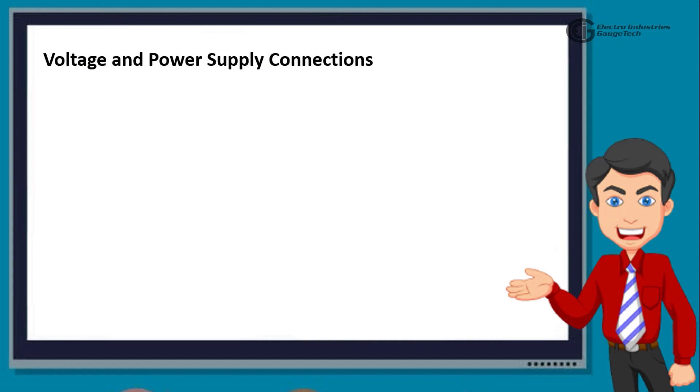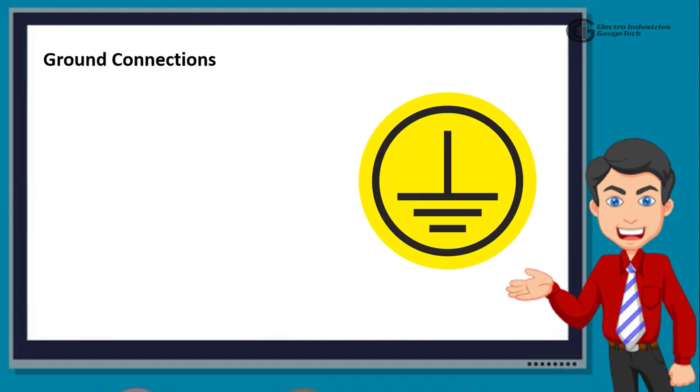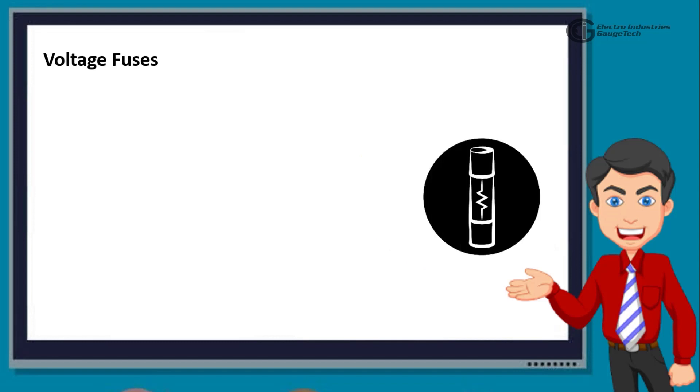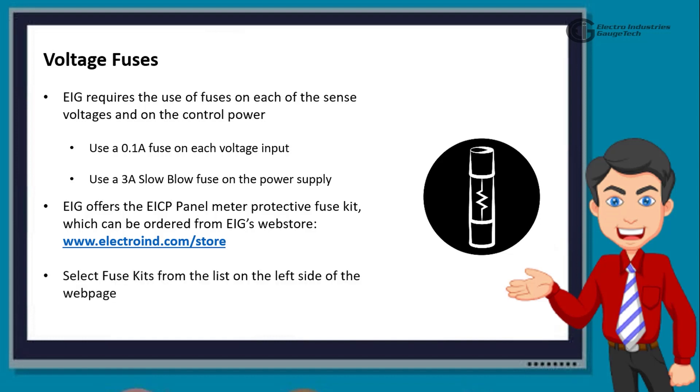Then, we move on to the voltage and power supply connections. Voltage inputs are connected to the back of the unit via optional wire connectors. The connectors accommodate AWG-1226 or 3.310.129 square millimeters. Next is the ground connections. The meter's ground terminals should be connected directly to the installation's protective earth ground. Use AWG-12.0.32 square millimeter wire for this connection. Now, talking about the voltage fuses, EIG requires the use of fuses on each of the sense voltages and on the control power. Use a 0.1 ampere fuse on each voltage input. Use a 3 ampere slow blow fuse on the power supply. EIG offers the EICP panel meter protective fuse kit, which can be ordered from EIG's Web Store. Select fuse kits from the list on the left side of the webpage.